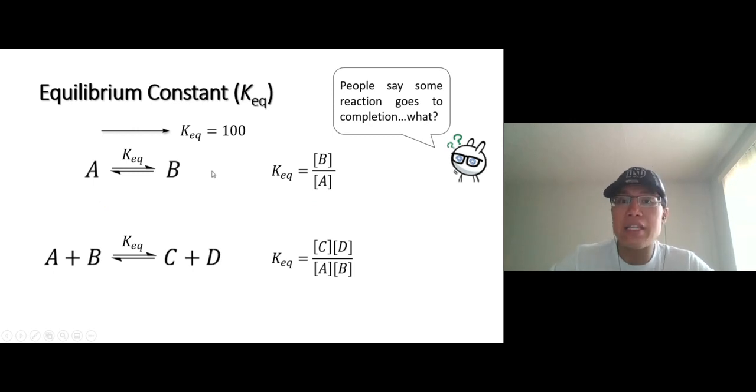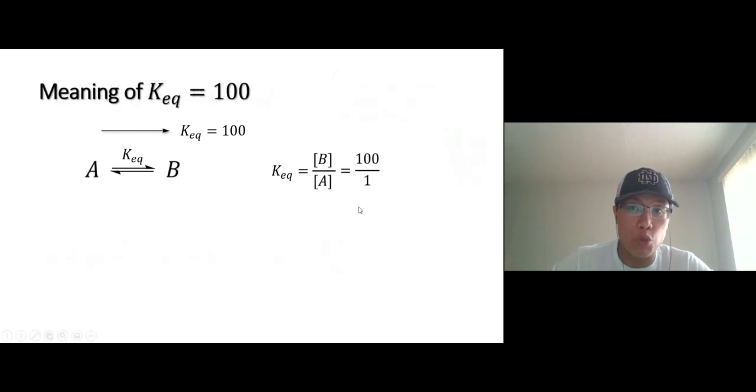It means that the concentration ratio of product over reactant is 100 to 1. So that's the concentration of B over A at equilibrium. And at equilibrium, if you do the math, the percent B is going to be 100 over 101 times 100, that's 99%. That's what we call the completion.